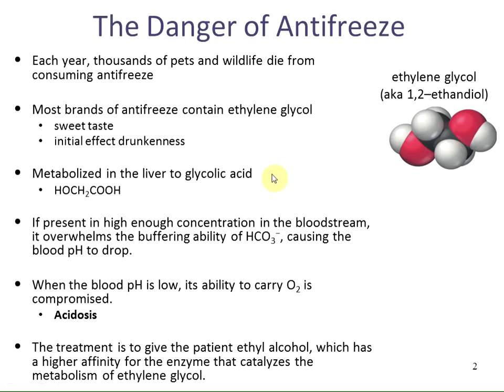The ethylene glycol gets metabolized in the liver to glycolic acid, and if present in high enough concentration in the bloodstream, it's going to overwhelm the buffering ability of the bicarbonate ion. This causes the pH of the blood to drop. When the blood pH is too low, its ability to carry oxygen is compromised — this is what we call acidosis. The treatment is to give the patient ethyl alcohol, which has a higher affinity for the enzyme that catalyzes the metabolism of ethylene glycol, meaning it has a higher K or higher equilibrium constant than the ethylene glycol.